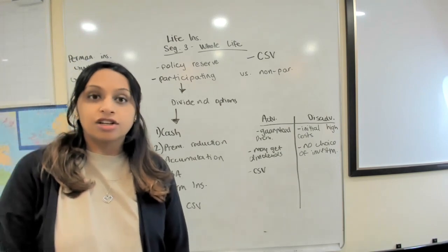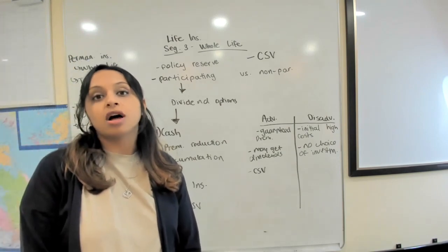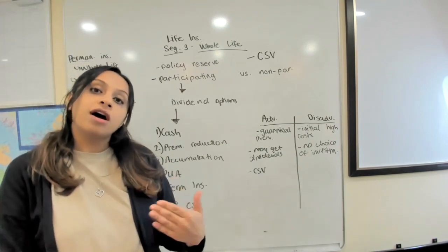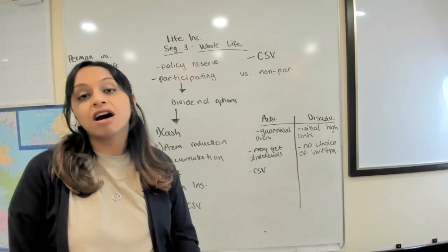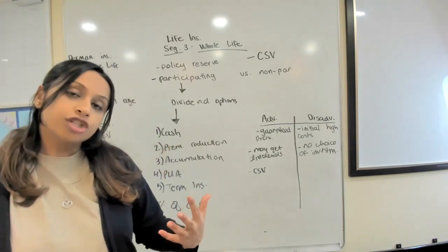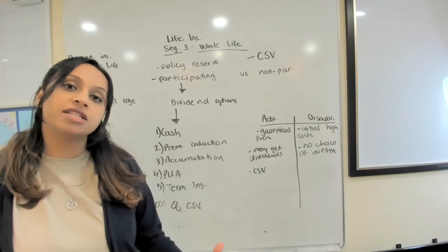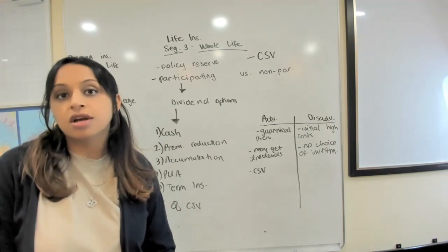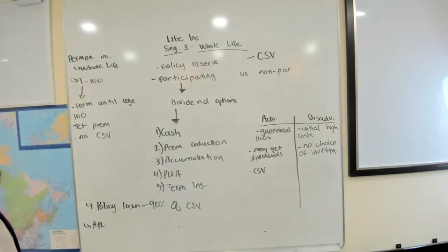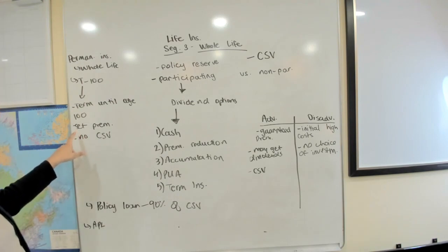Even though term is considered non-permanent coverage, when we go to T100 it becomes permanent coverage because it's covering you up until age 100. So it's not like the other term insurance policies which have a limitation of 70 or 75 years. This is covering you up until you're 100 years old. There is a term until age 100 and it's great because it also has set premiums that means that the premiums are not going to increase.